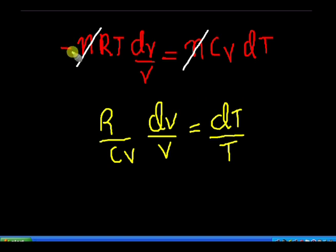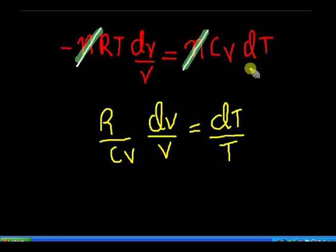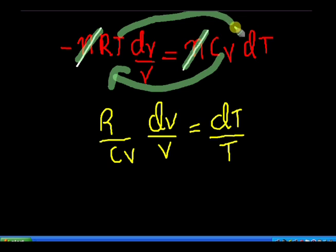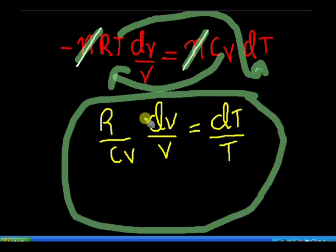Substituting P by nRT/V, we get minus (nRT/V) dV equal to nCv delta T. Cancelling nRT/V on both sides, we get R/Cv times dV/V equal to dT/T. I have rearranged the equation and R is a universal gas constant.